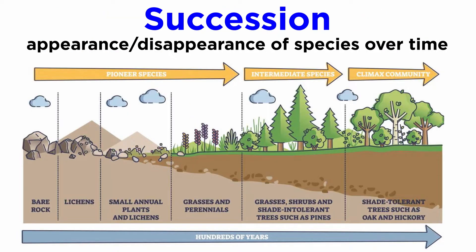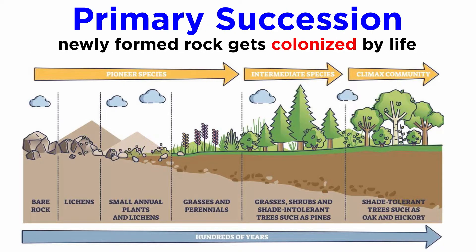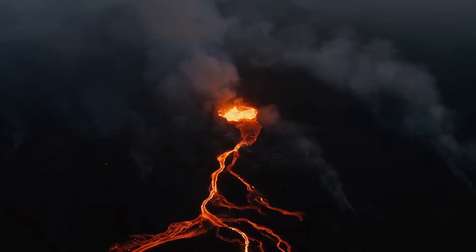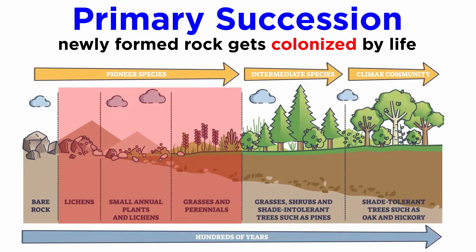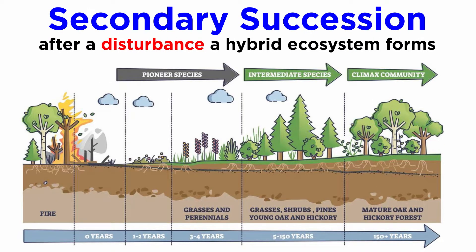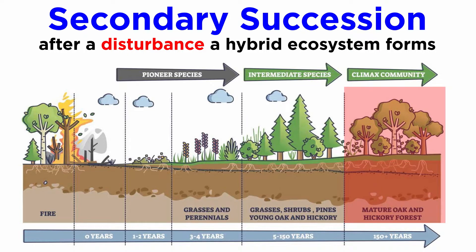Succession describes the sequential appearance and disappearance of species in a community over time after a severe disturbance. In primary succession, newly exposed or newly formed rock gets colonized by living organisms. An example is the formation of new lava on the island of Hawaii, where succulent plants take root first, becoming the pioneer species and setting the stage for others. In secondary succession, part of an ecosystem is disturbed — say due to a wildfire — and remnants of the previous community remain, and a hybrid ecosystem then emerges. In both cases, there is a sequential change in species until a more or less permanent community develops.